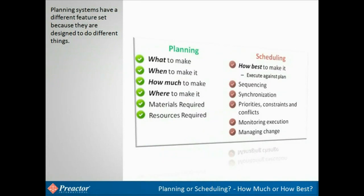In order to understand the problem, we should look at the fundamental difference between planning and scheduling. Planning, typically available in an ERP system, is about working out how much we should make, based on demand, either real or forecast into the future. Based on the demand, it works out what to make, how much to make, when to make it, and, in the case of multiple plans or multiple resources that can do the same thing, where to make it. Based on this, it will work out the load on resources, though it may do this with infinite capacity, and what materials are needed.